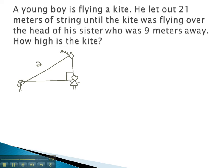He's let out 21 meters of string, so that's the string on the kite, and his sister is 9 meters away. We want to know how high the kite is flying above the sister. Well, we know the important letter to keep track of is c, which is opposite the right angle. The other two can be a and b in either order, and then we can use a squared plus b squared equals c squared.